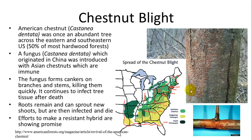Efforts to make a resistant hybrid are showing progress. They have crossed it with Chinese chestnuts to see if you can get a hybrid that will be resistant. The problem is the Chinese chestnut does not have the same morphology — American chestnuts were great because they were big, straight, and produced a lot of chestnuts. Some Asian forms have a more bush-like appearance, and that's not what we want. So they're trying to find a hybrid with the qualities of the American chestnut and the resistance, but so far efforts have not succeeded — eventually they fall prey to the disease.